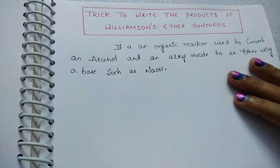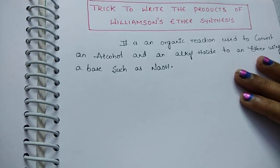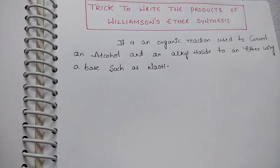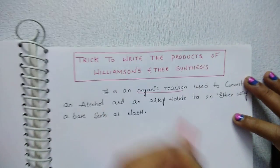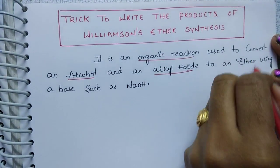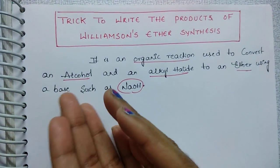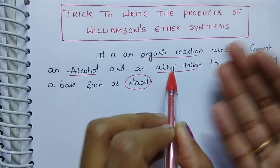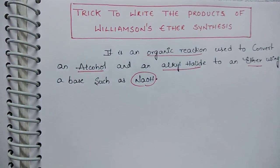Hi students, I hope you are doing well. In today's session I am going to discuss an excellent trick to write the product of Williamson ether synthesis. This is one of the important named organic reactions. First, I am going to discuss about Williamson ether synthesis — it is an organic reaction used to convert an alcohol and an alkyl halide into an ether by using a base like NaOH. This is a very important reaction for the preparation of ethers.